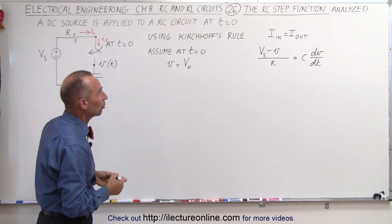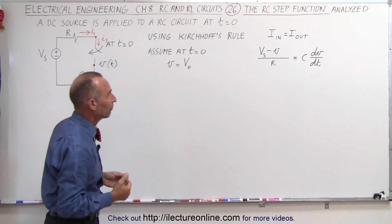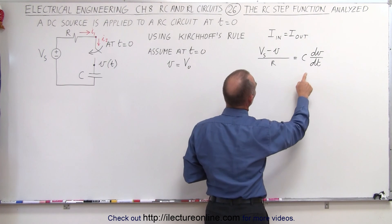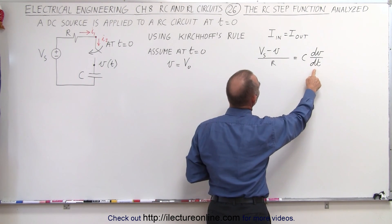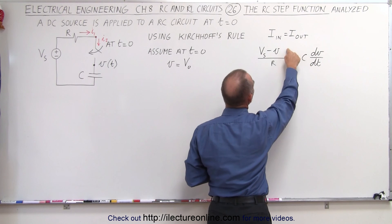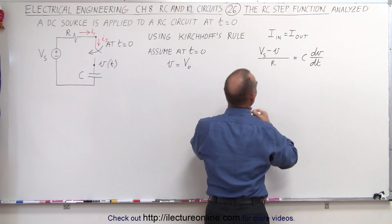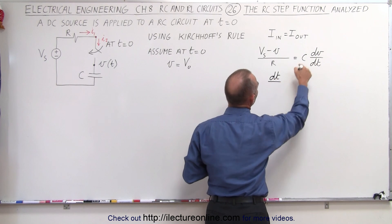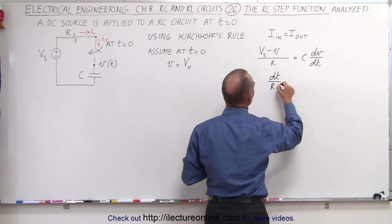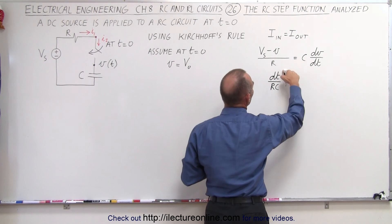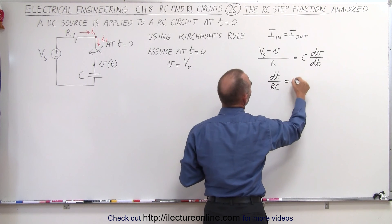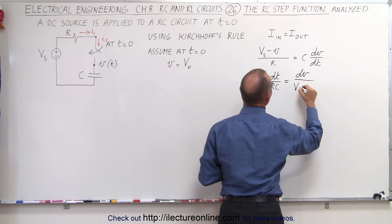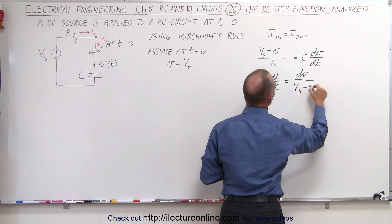Now we're going to try to determine voltage as a function of time by separating the variables. We're going to bring the dt over and we have dt divided by RC, bringing the C down, the dt there, is equal to dV divided by V_S minus V.